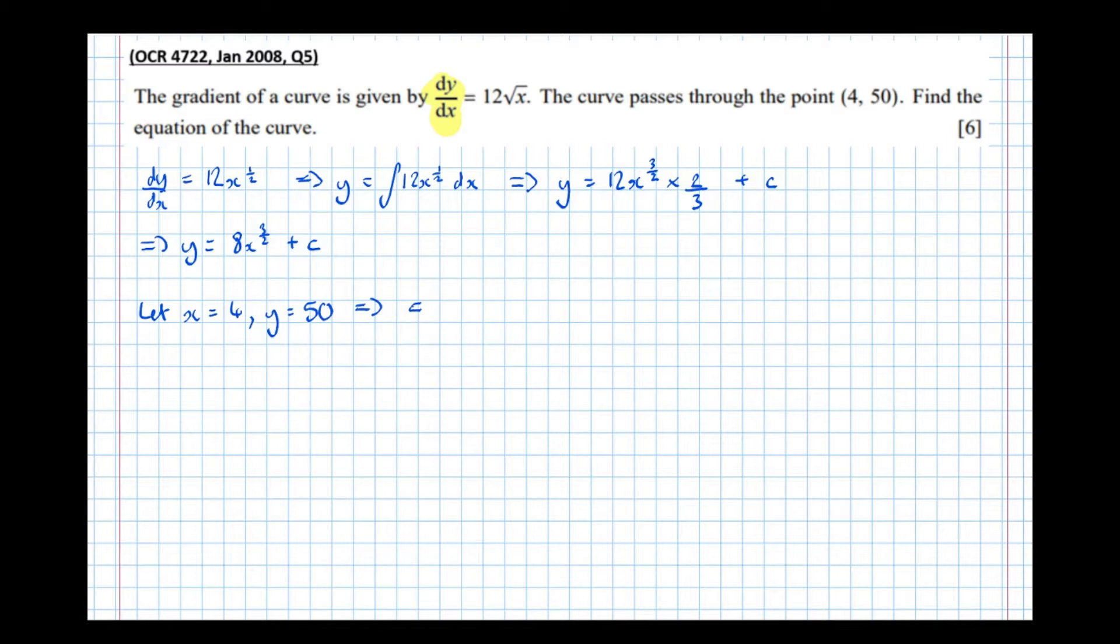And that means that 50 equals 8 lots of 4 to the 3 over 2, plus c.